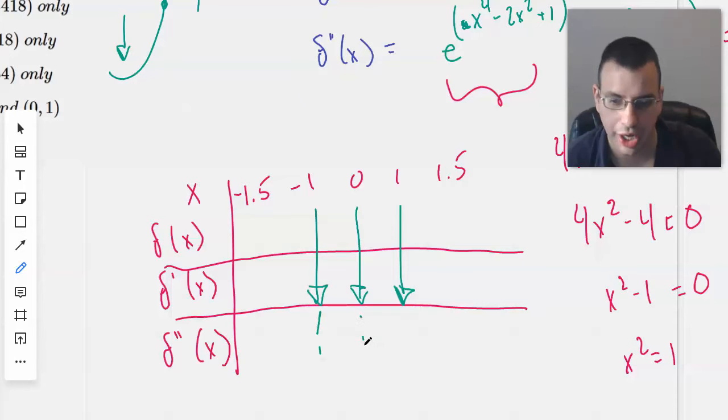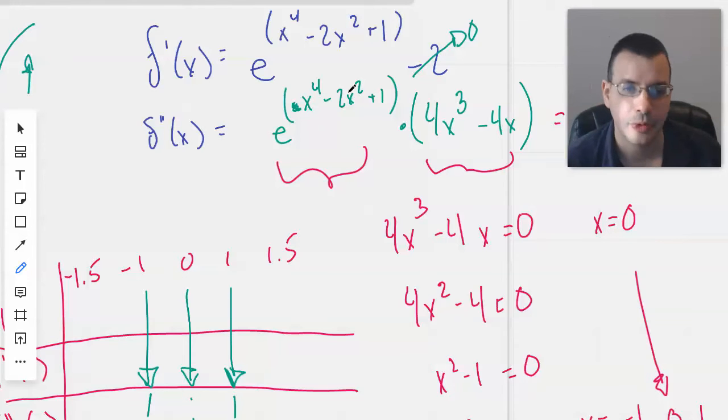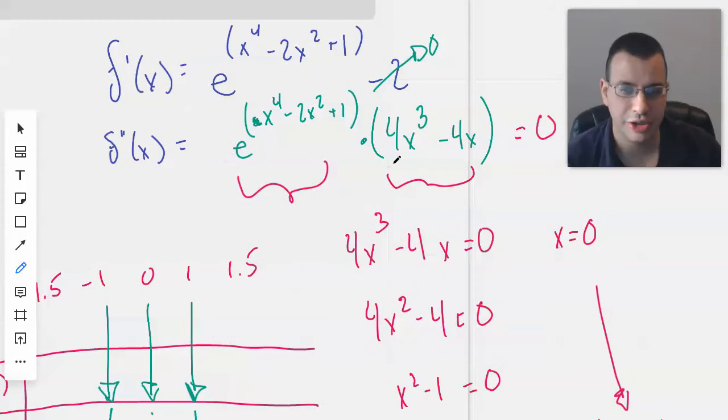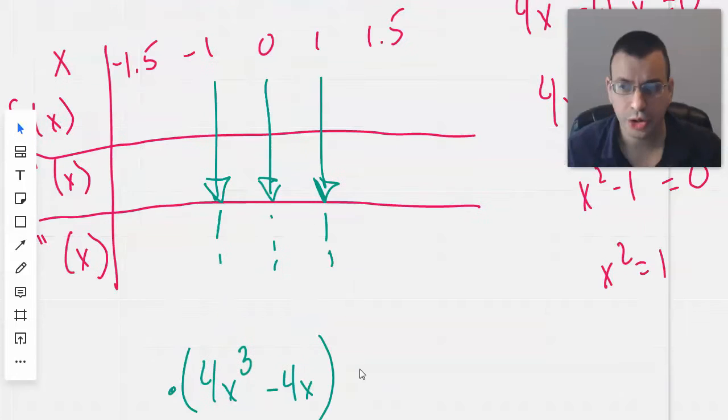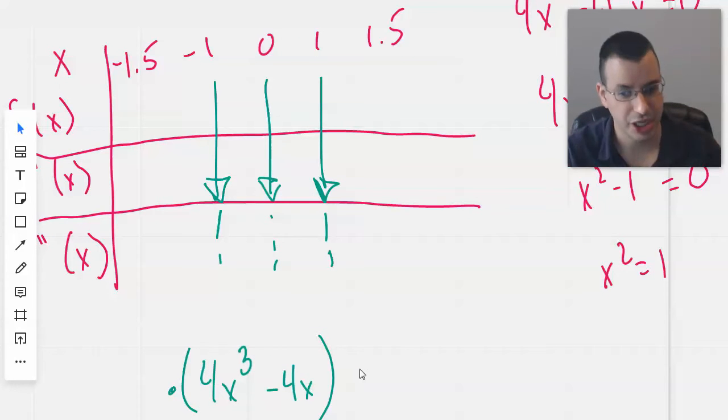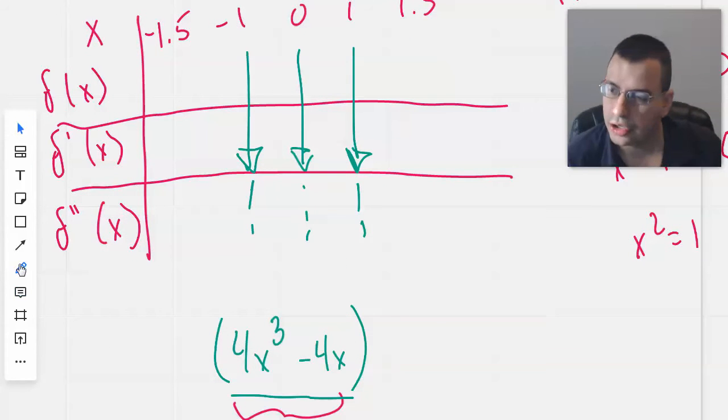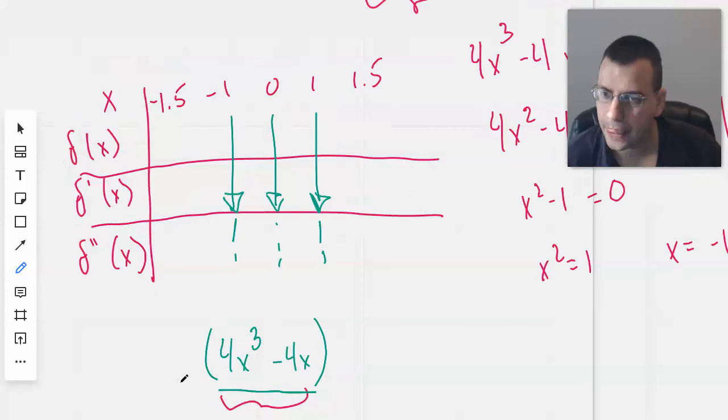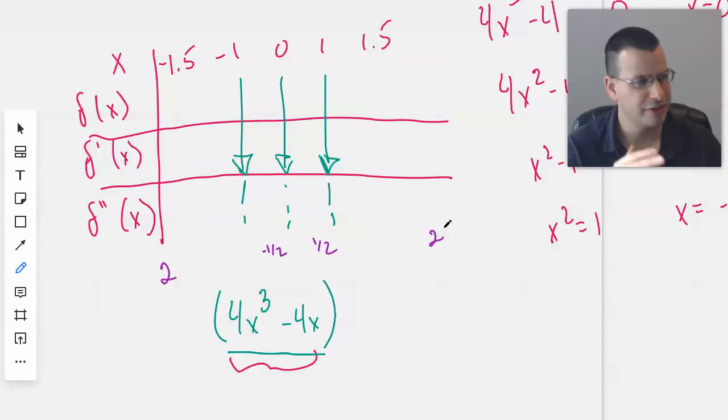We go back to f''(x), which gives us our concavity. The only part of this equation that matters is this portion because this side will always be positive. We don't want to plug in -1, 0, and 1 because those are where it changes. So we'll test points on each side. I'm going to choose -2, -1/2, 1/2, and 2. Now you might be thinking 2 is outside our 1.5 range - that's okay.